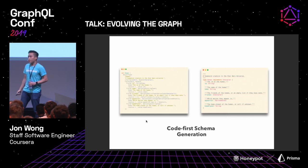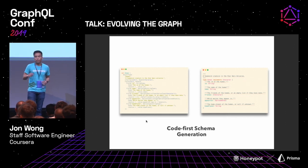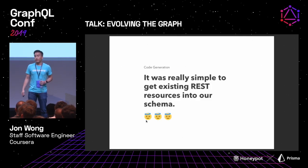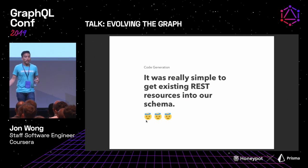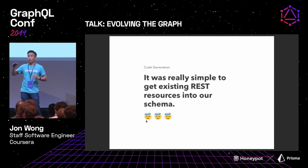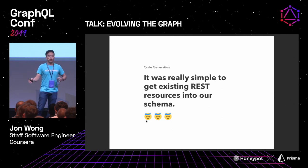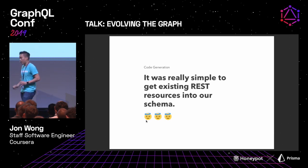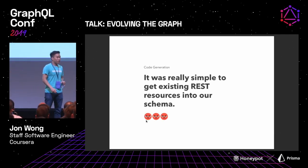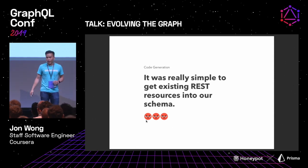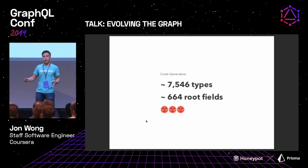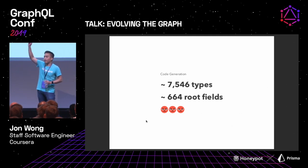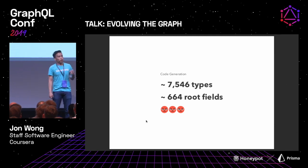Code-first schema generation was also really interesting, for the same reasons we've heard about code-first development. One: it was really simple to get an existing REST resource into our schema, because we were just wrapping our existing Scala REST resources. You'd need to fulfill one or two things and we could auto-generate that into a resolver and into a schema. Downside: it was really simple to get REST resources into our schema. What happened was we had a type explosion — types that maybe shouldn't have been in our schema in the first place. We have a lot of root fields, and that was a big problem because we were exposing things we didn't expect to expose.